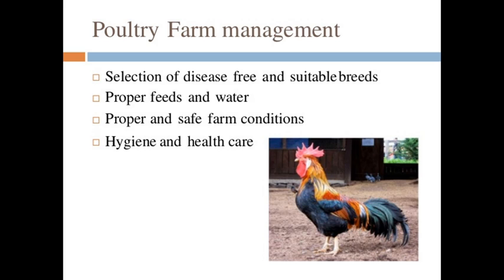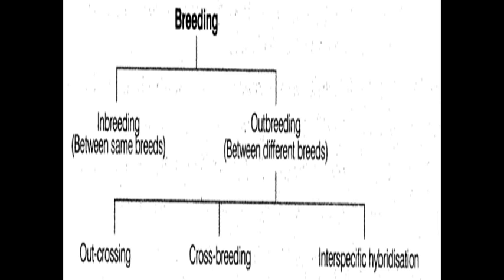For poultry breeds, White Leghorn and Indian Leghorn are exotic breeds of poultry, whereas indigenous breeds are Asil and Indian Asil. In this way, children, we have finished dairy farm management and poultry farm management. After these, we look at beekeeping and fish culture.